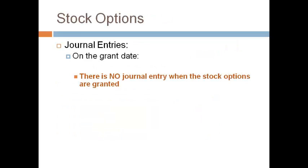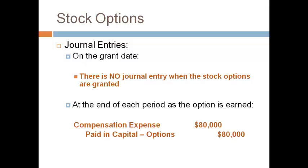No journal entry is recorded on the grant date. The expense is recorded over the time employees work to earn the options, and not when they are granted. One year's expense is recorded to compensation expense. Stock option expense or stock compensation expense are accounts that are also used. The stock option is equity, and an equity account is used to record the stock option. A liability account is not used because the company will not pay the employee in cash — the company will compensate the employee with equity. Paid-in capital options indicates that the company has a potential obligation to issue stock to the employee. The entry to record compensation expense is recorded at the end of each period the employee works to earn the options.